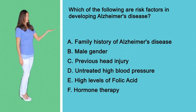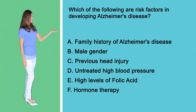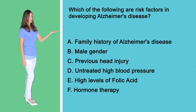A. Family history of Alzheimer's disease. B. Female gender. C. Previous head injury. D. Untreated high blood pressure. E. High levels of folic acid. F. Hormone therapy.